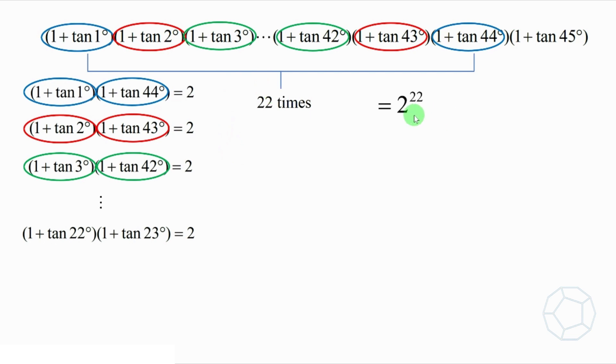So the answer is 2 to the power of 23. It's equal to 8,388,608.